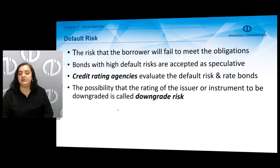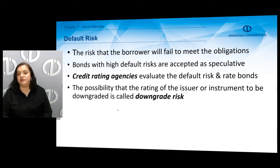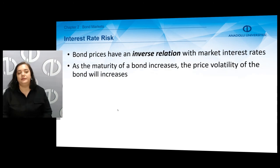Bonds with high default risk are considered speculative bonds. Credit rating agencies evaluate the default risk of bonds and accordingly rate them, assigning a certain rating depending on the default risk and credit worthiness of issuers. The possibility that the rating of the issuer or instrument will be downgraded is called downgrade risk. If the default risk of the bond increases, there could be some downgrading. Interest rate risk is also an important risk associated with bonds.